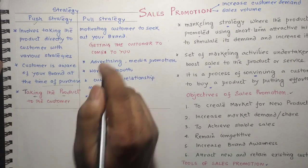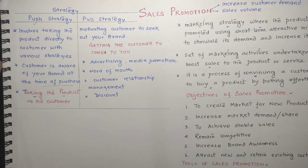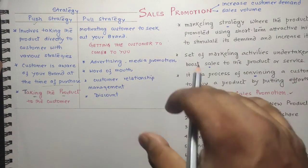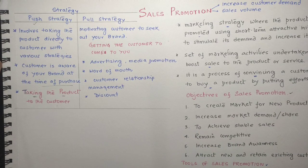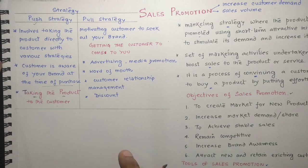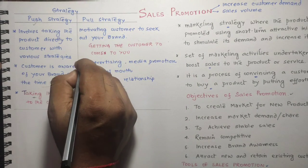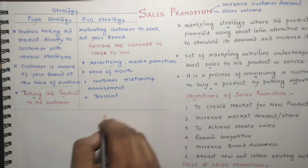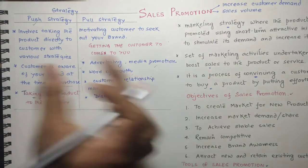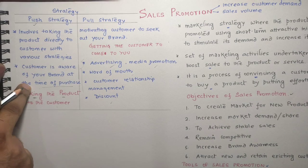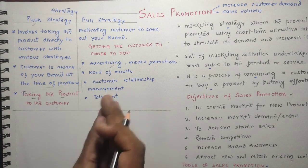The pull strategy is just the opposite of push — instead of pushing the product to the customer, you get the customer to come to you. For example, through social media promotion, a gadget is advertised and consumers start searching for the product, the company, and its features. The pull strategy motivates the customer to seek out your brand. Methods used include advertisement, media promotion, word of mouth, customer relationship management, and discounts. In pull strategy, the consumer does research on a brand and then purchases; in push strategy, the company creates strategies to get the product to the ultimate customer.